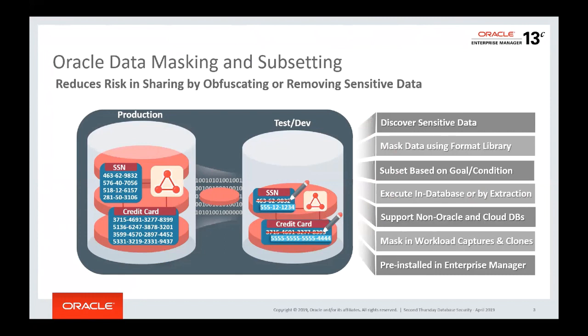Data masking is the process of permanently replacing sensitive data with fictitious yet realistic-looking data. It generates fully functional data with similar characteristics as the original, replacing personal or confidential information. It limits sensitive data proliferation by anonymizing data while enabling production-like usage, ensuring that malicious actors cannot benefit from the fictitious data even if they gain access.